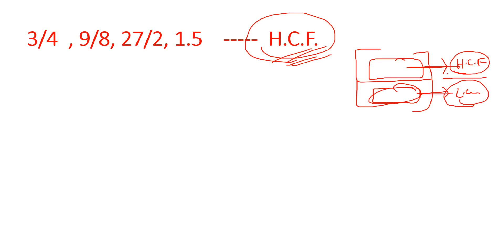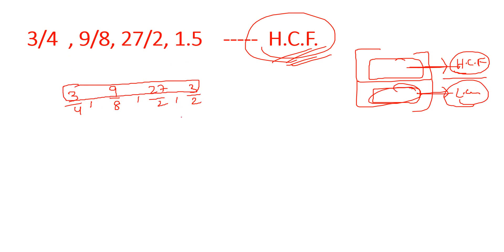This is the final HCF and LCM question. The fractions are: 3/4, 9/8, 27/2, 1.5 (which is 3/2), and 3/2. For HCF of fractions, we take HCF of numerators over LCM of denominators. The numerators are 3, 3, 9, 27 — all divisible by 3, so HCF of numerators is 3. Simple.